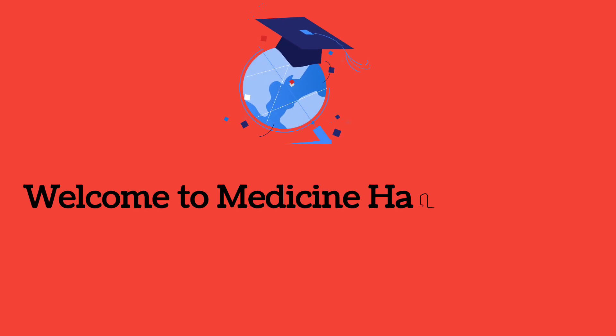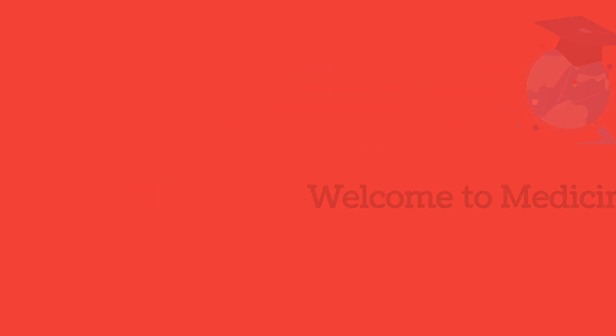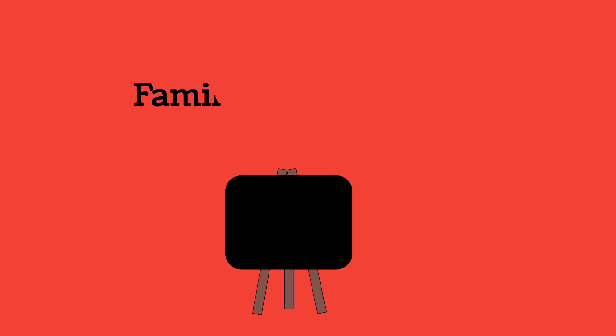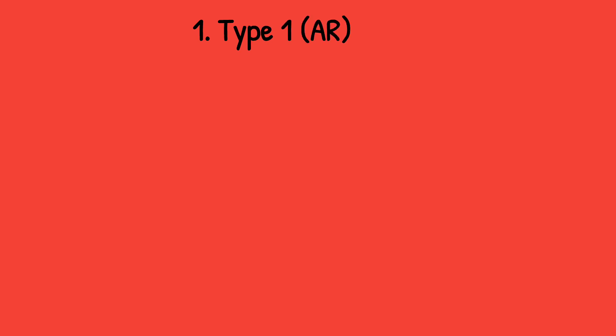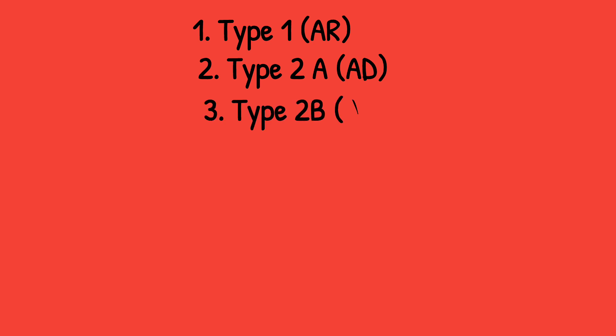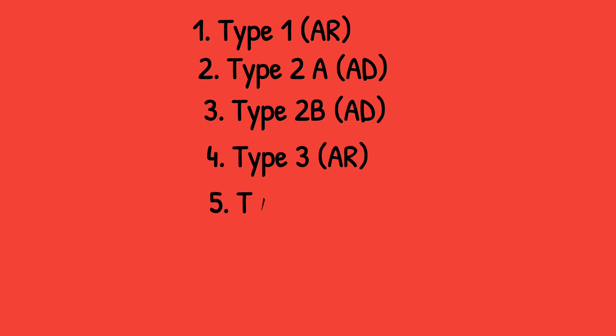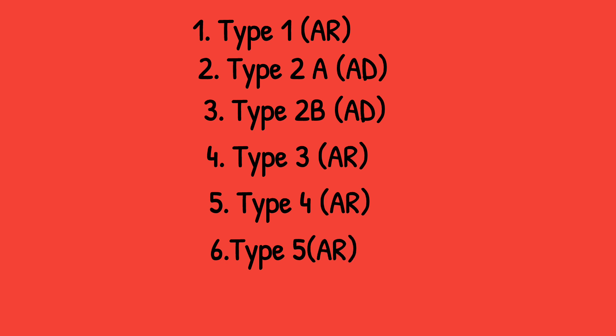Welcome to Medicine Handy Point. Today we will discuss familial dyslipidemia — an important but difficult topic. There are five types: Type 1 autosomal recessive, Type 2a autosomal dominant, Type 2b autosomal dominant, Type 3 autosomal recessive, Type 4 autosomal recessive, and Type 5 autosomal recessive. Only Type 2 is autosomal dominant.